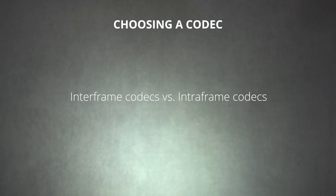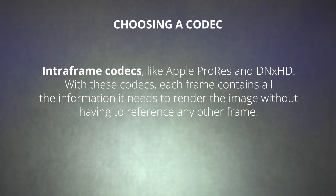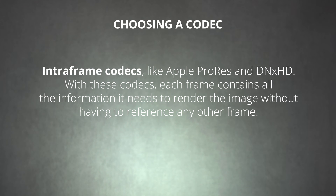Let's focus on the difference between interframe codecs and intraframe codecs. H.264 is an interframe codec — most frames in the sequence must borrow information from other keyframes to properly display an image. Intraframe codecs like Apple ProRes and DNxHD work differently: each frame contains all the information it needs to render the image without referencing any other frame. Interframe codecs put more strain on your editing system, while intraframe codecs generally offer a smoother editing experience since each frame is self-contained.